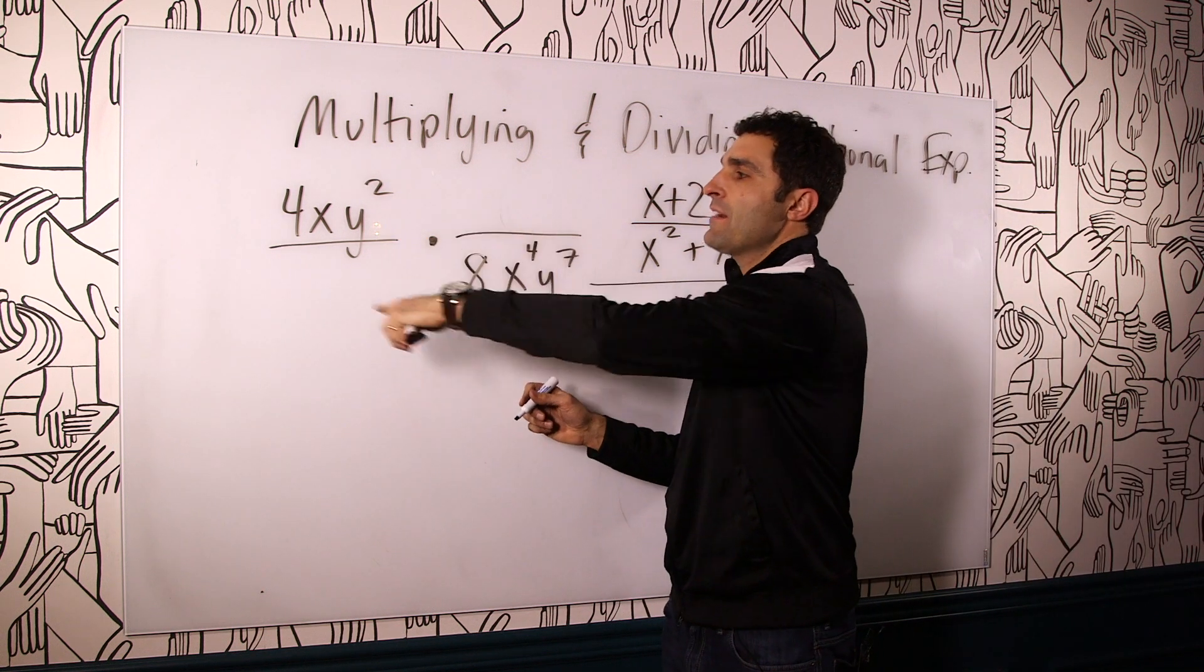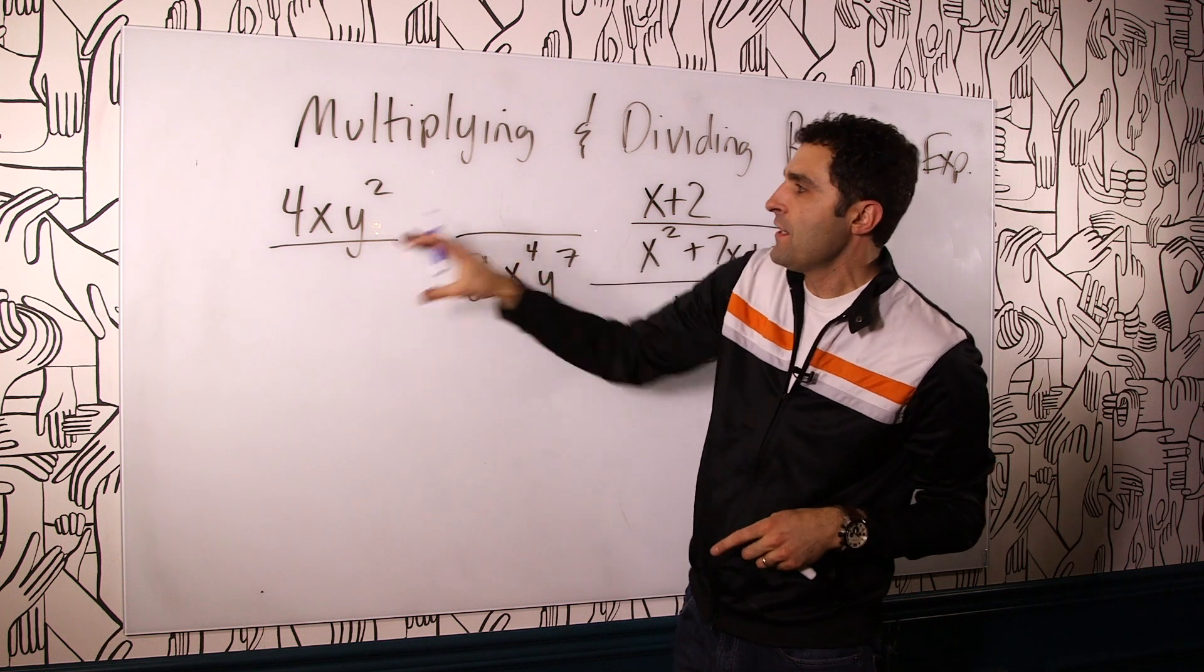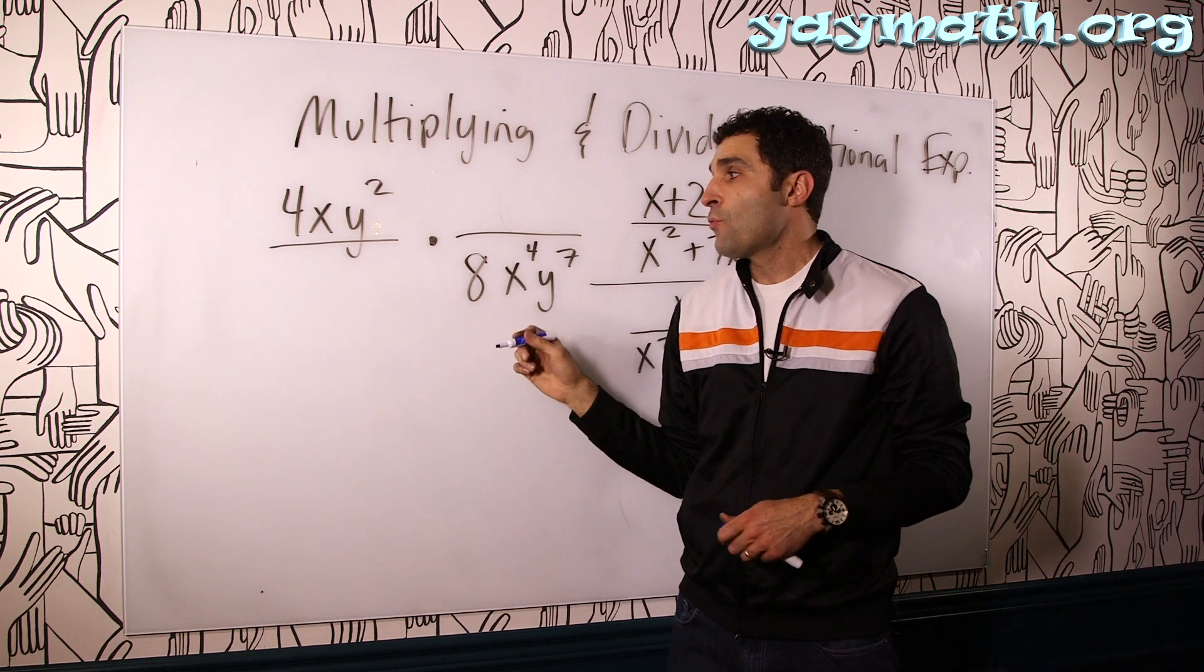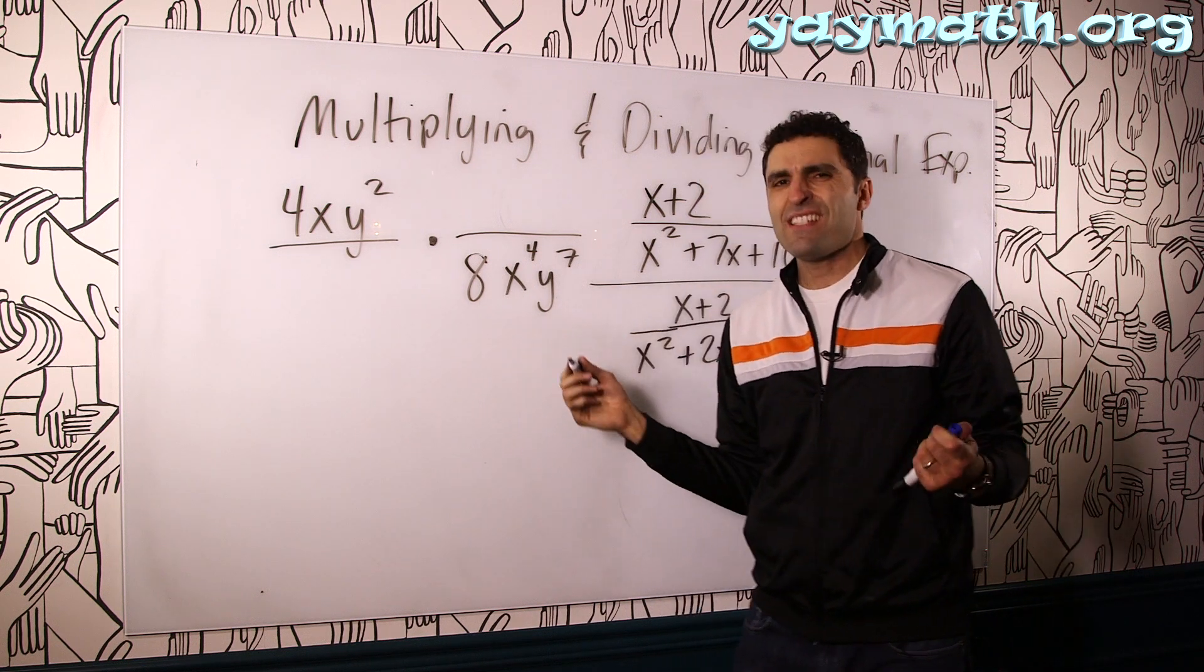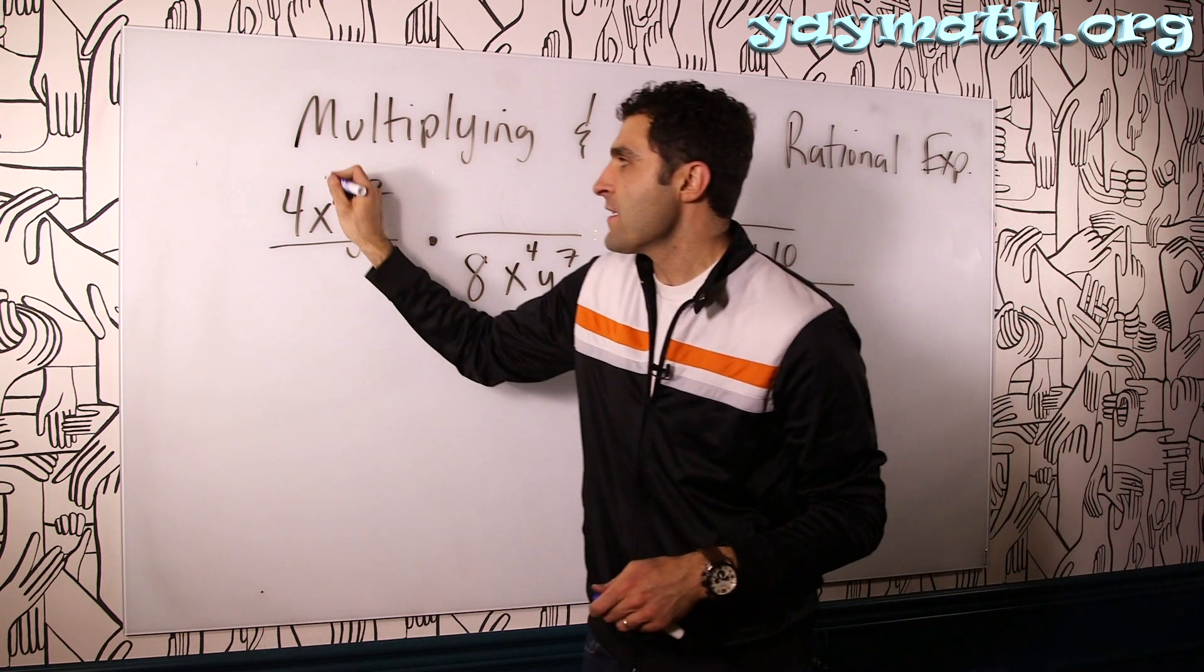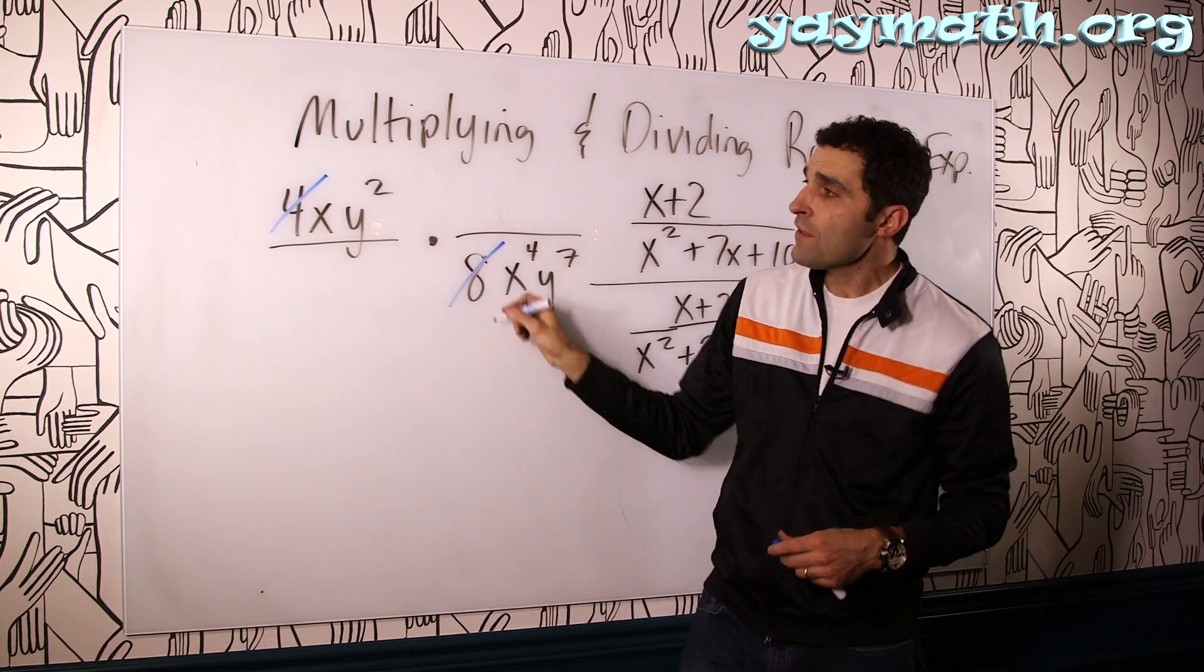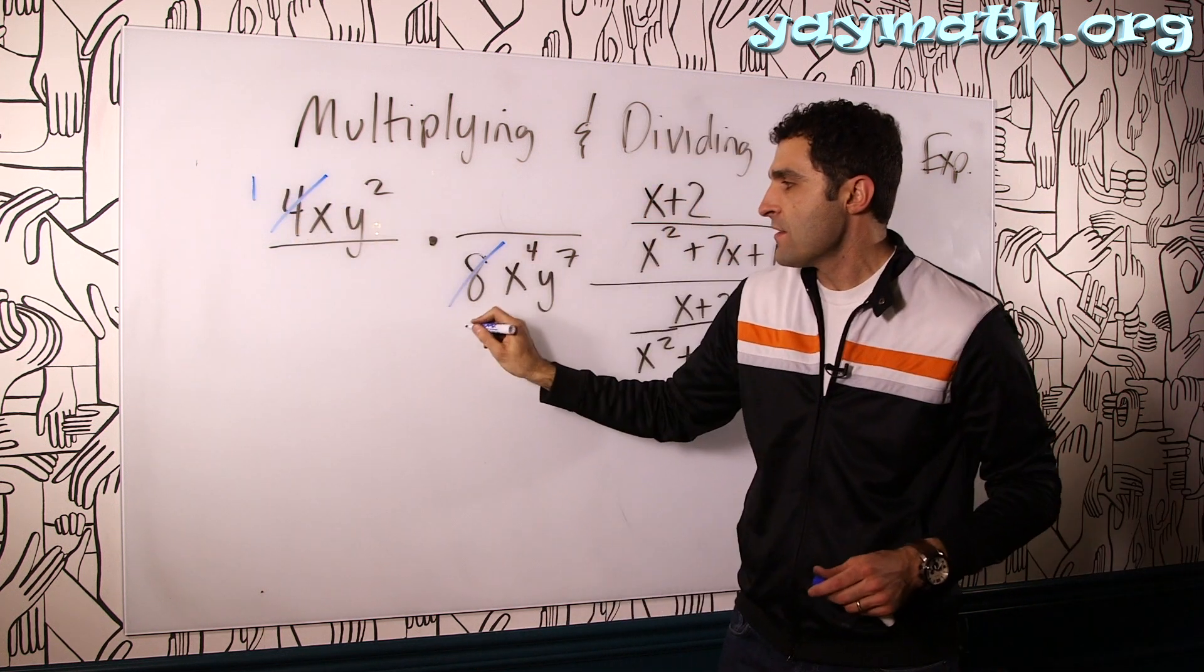I paired this down so that pretend there's stuff in here and stuff in here. It would operate the same way. Whenever we're multiplying fractions, we don't need a common denominator, we just need to cancel. So we can think of this as 4 and 8. The common factor with 4 and 8 is the number 4.